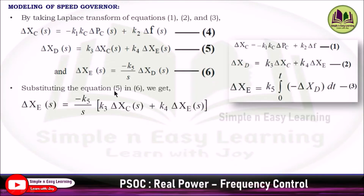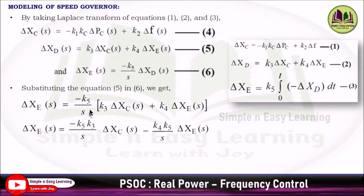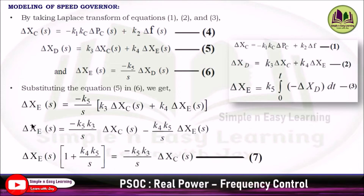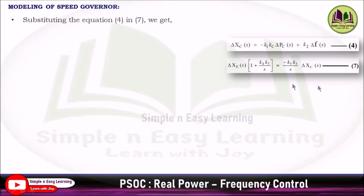Substitute Equation 5 into Equation 6 and multiply K5/s inside the bracket. There is del_Xc(s) on both the left and right sides. Taking del_Xc(s) common and moving terms gives (1 + K4·K5/s) equal to the remaining term (−K5·K3/s) × del_Xc(s). Take this as Equation 7.